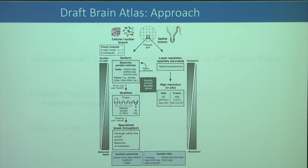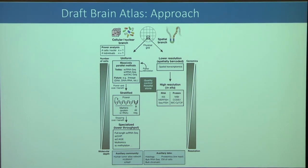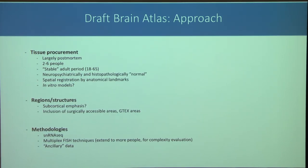The overall approach — constrained in many practical ways — is to have one arm of unbiased, high-scale sampling using sequencing approaches, dovetailed with a spatial arm. Because of the immense tissue and cellular complexity of the brain, the group has resigned itself to sampling a smaller number of individuals to obtain a broader sense of overall anatomical complexity.